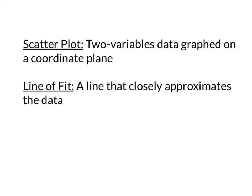A scatter plot is two-variable data graphed on a coordinate plane. Because it's two-variable data, these two pieces of data are going to be able to be paired up, so we'll be able to have an x-coordinate and a y-coordinate, even though it might not technically be x and y. A line of fit is going to be a line that closely approximates the data. We're going to kind of estimate that line of fit. There is a way to find a line of best fit, but that's going to involve using technology to help you out.